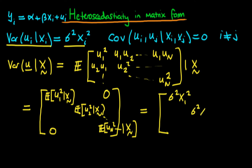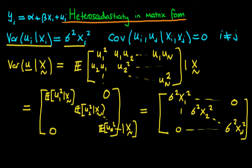So we can rewrite the diagonal components using the variance definition: sigma squared times x1 squared, sigma squared times x2 squared, through sigma squared times xn squared, with all off-diagonal components equal to zero. We can write this as sigma squared times the diagonal matrix omega, where omega has x1 squared, x2 squared, through xn squared on its diagonal. This is similar in form to the homoscedastic case, but omega is not the identity matrix since the diagonal components are not all equal to one. This compact representation will help us derive BLUE estimators in the presence of heteroscedasticity.